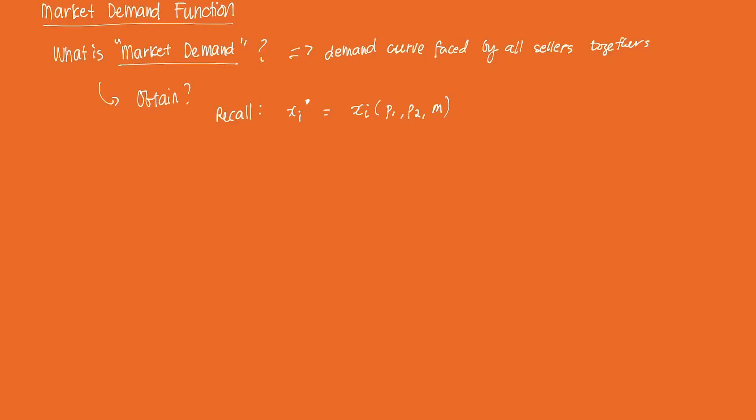So note, the consumer, as we know from the assumptions, is assumed to take the prices of the goods as given. And the consumer will react to changes in price by changing their demand for the good.